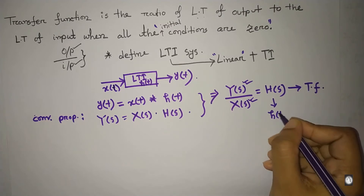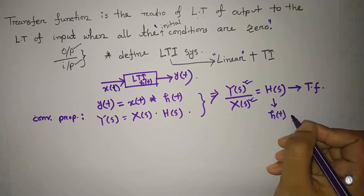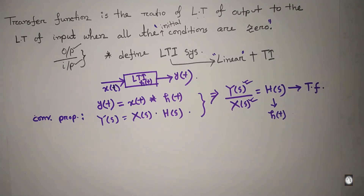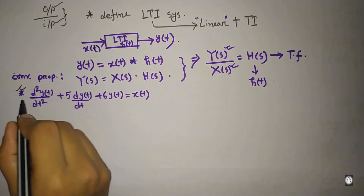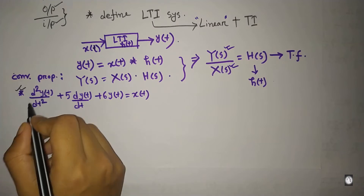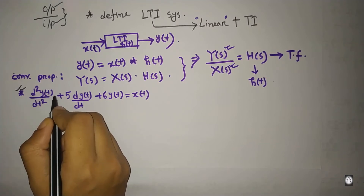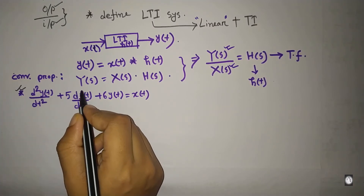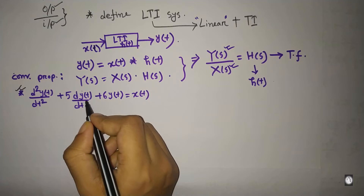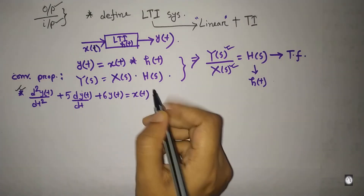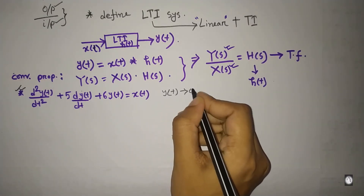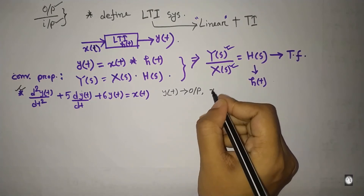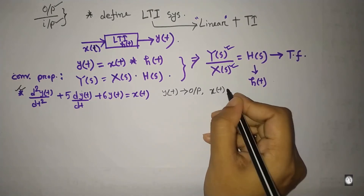As an example, consider the differential equation: d²y/dt² + 5 dy/dt + 6y(t) = x(t), where x(t) is the input and y(t) is the output.